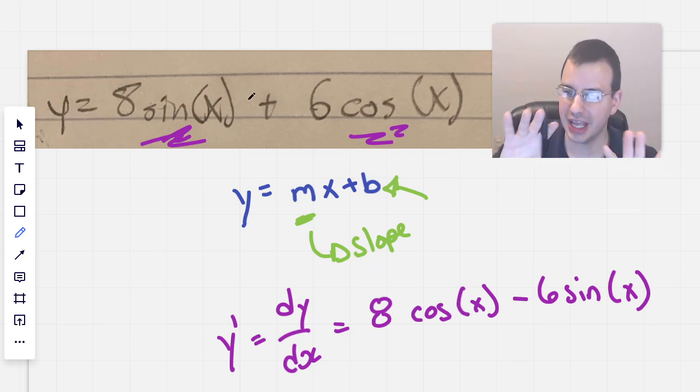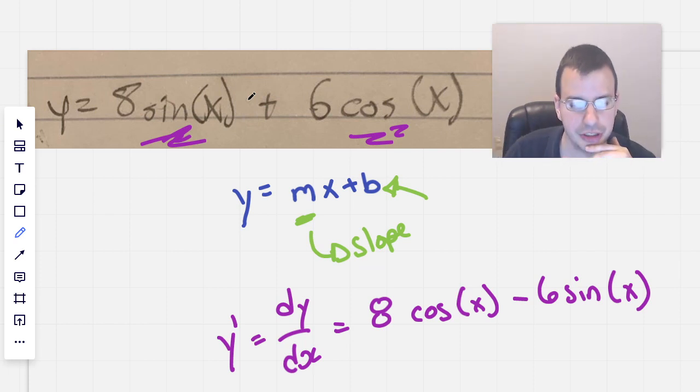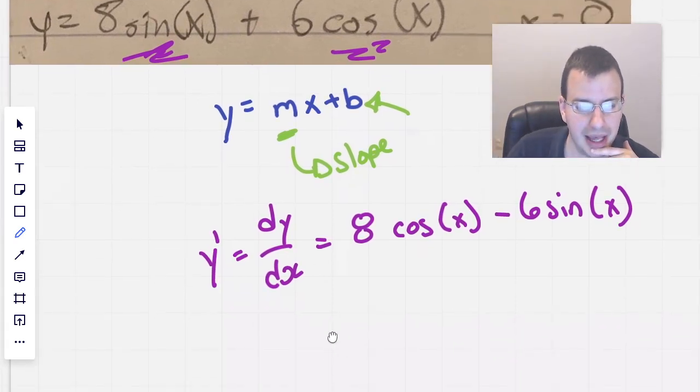And since they're not multiplied together, they're just added, we can do them each individually. So, not too bad. Not too bad at all. So this is our derivative of y with respect to x. Y prime of x.